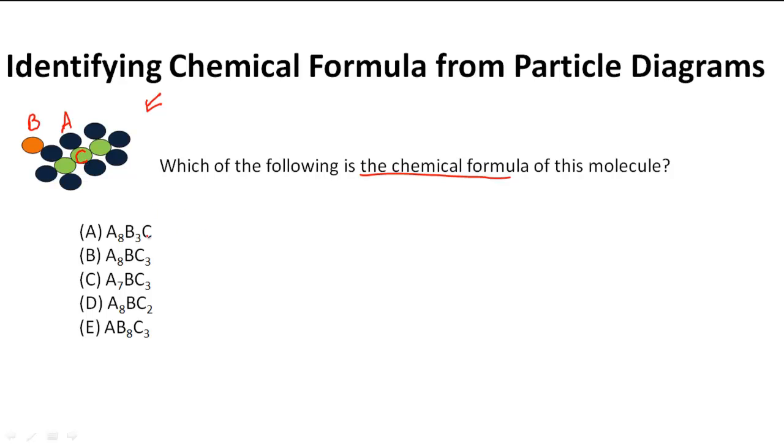So what we have to do to figure out the chemical formula as written is actually count the number of atoms that are in this particle diagram.